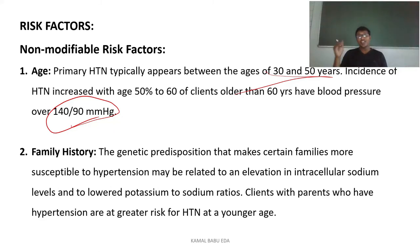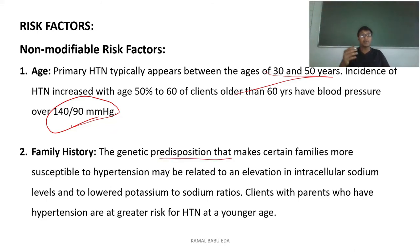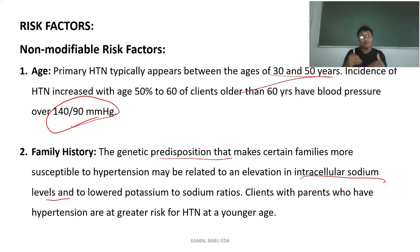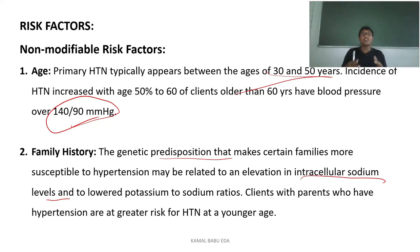Coming to family history, people with a family history of hypertension mostly have it as a genetic disease. The genetic predisposition may be related to an elevation in intracellular sodium levels or lowered potassium-to-sodium ratios. If potassium is decreasing and sodium is increasing, it leads to water retention, increased fluid volume, and ultimately hypertension. Clients whose parents have hypertension are at greater risk.